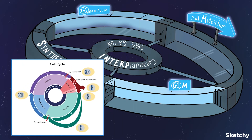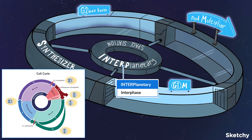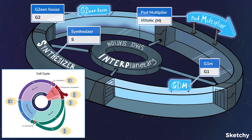This interplanetary space station is fully equipped with a brand spanking new gym, a factory for synthesizing new information, a greenhouse, and of course a pod multiplier — because no space station is complete without a pod multiplier. Alright, let's take a tour of the facilities.